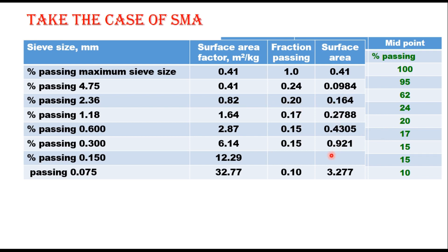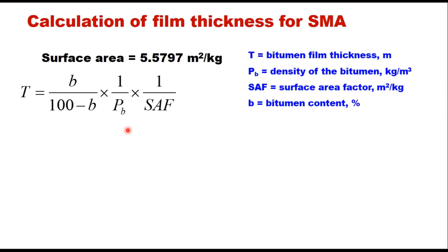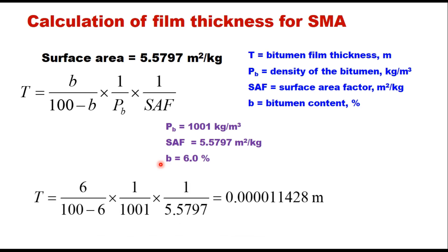Carrying out all calculations, the total surface area factor comes to 5.579 m²/kg. Using the same film thickness equation with ρ_b = 1001 kg/m³, SAF = 5.5797 m²/kg, and B = 6%, the film thickness is calculated as 0.00001148 m, or 11.428 microns.